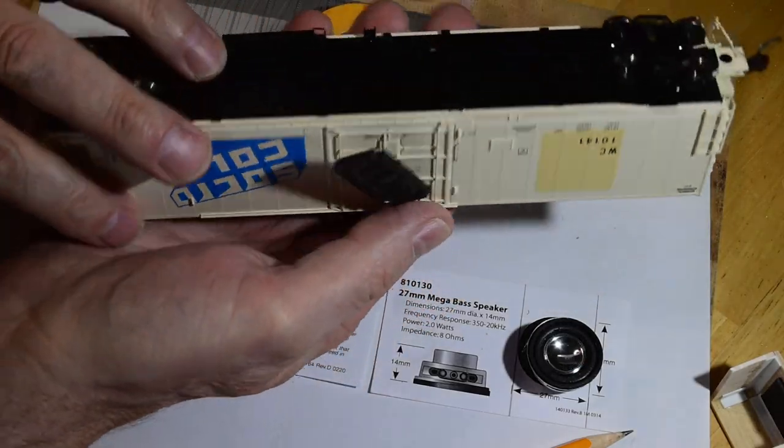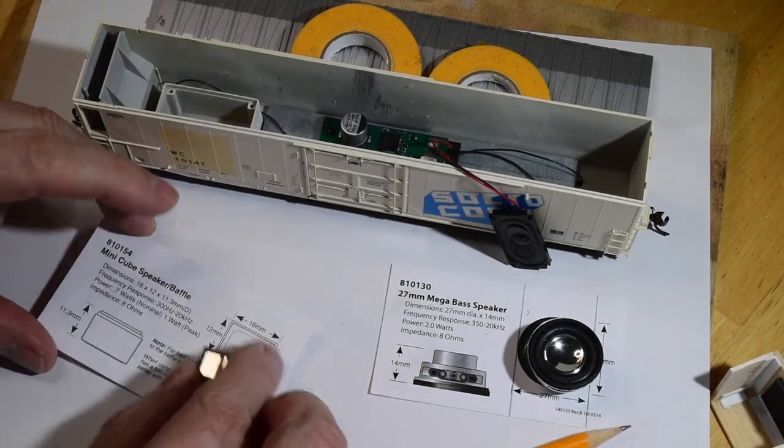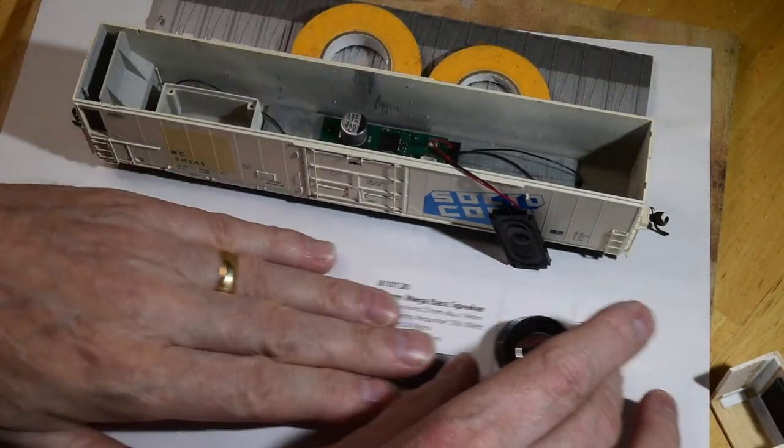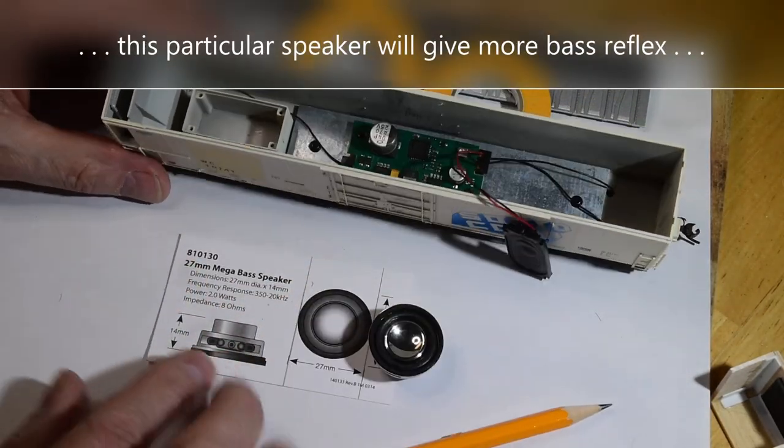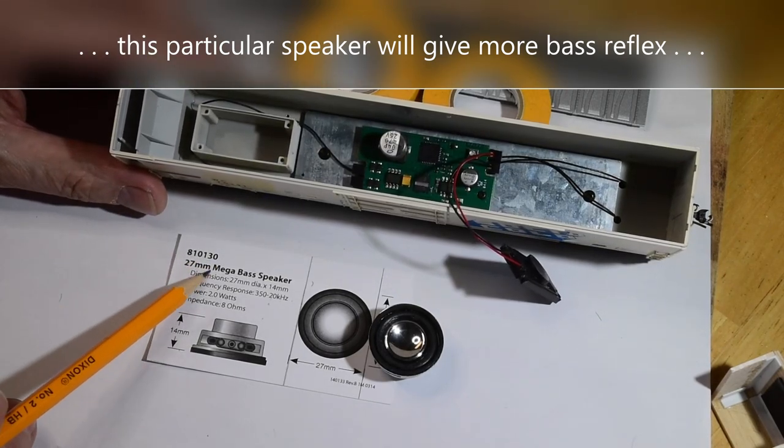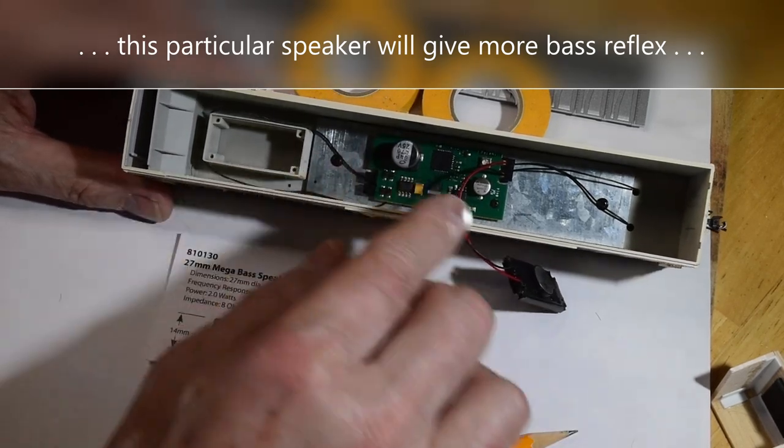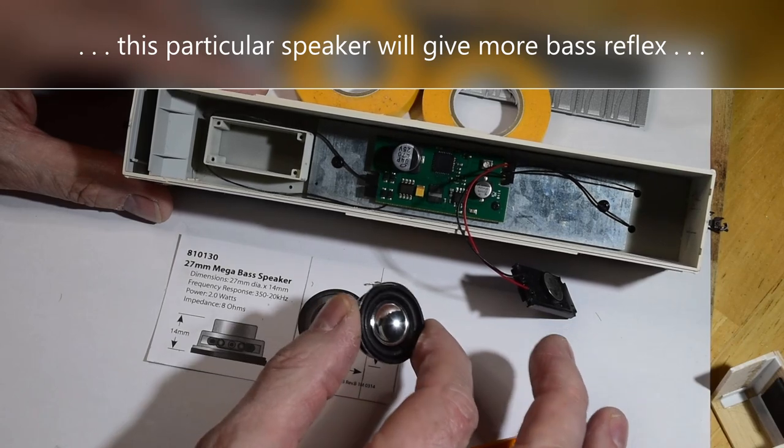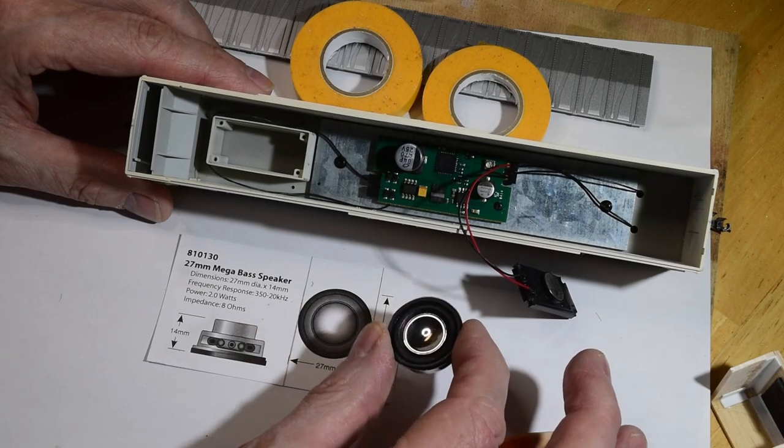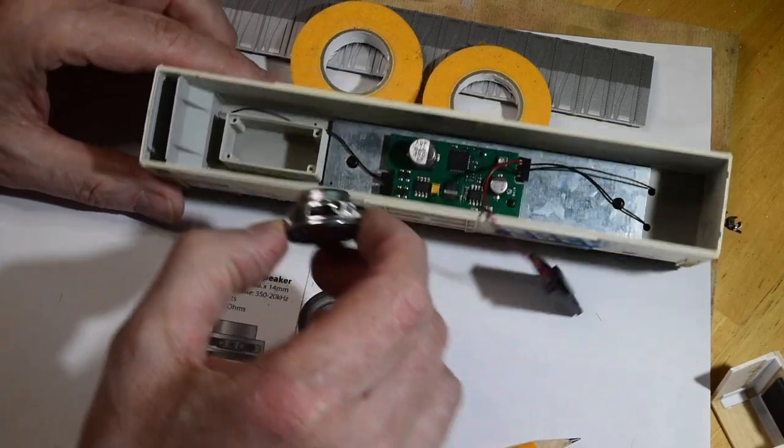I'm not going to use this minicube speaker baffle, I'm going to use this for another project. But what I'm going to do instead of the little sugar cube is use this 810130, 27 millimeter mega bass speaker at two watts capacity, which probably doesn't matter with this board. But I want to see what it sounds like. I have this kicking around, I can't really use it in my long hoods right now unless I do a major conversion and mount it sideways because of the width of it.